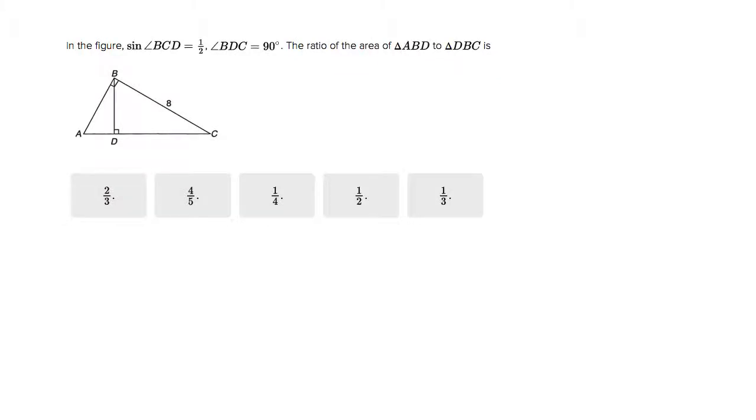This is the real Tom Rose and we are solving a special triangle here. Whenever you have a right triangle with a height drawn inside it to create two more right triangles, all three of those triangles are similar. In this particular case, they tell us the sine of angle BCD is 1/2.